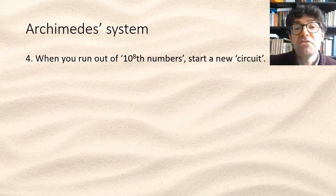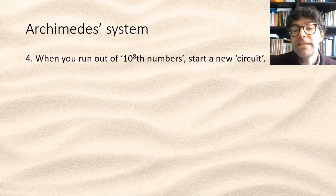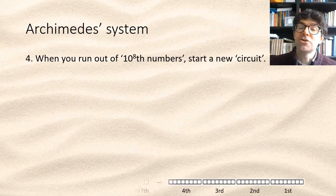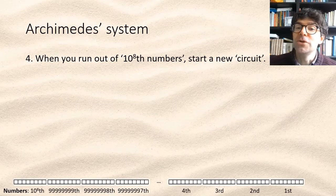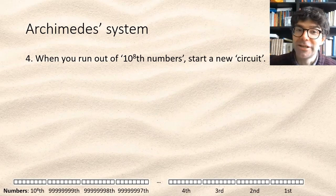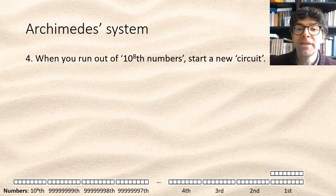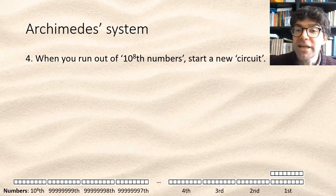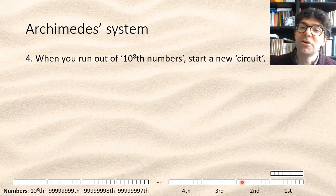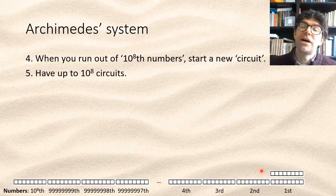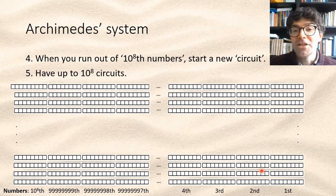But then Archimedes went even further than that. He says, well, call what we've seen so far the first circuit or the first period of numbers. So its top becomes the unit for the first numbers of the second circuit. Like any unit in the system, we can have up to 10 to the power of 8 of them. So we reach the second numbers of the second circuit and so on. And we can go all the way up talking about 10 to the 8 circuits.